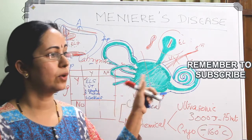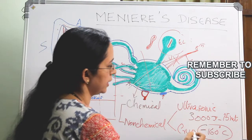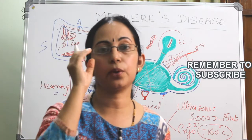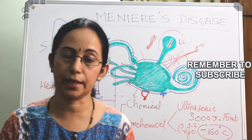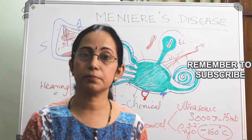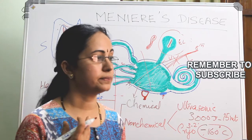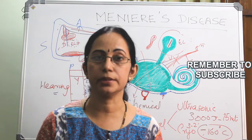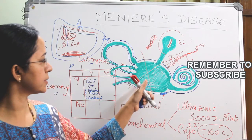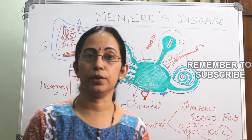Cryo is given as 3 cycles of 2 minutes each. The cryoprobe is kept into the ampullated end of the lateral semicircular canal through a transmastoid approach at minus 160 degrees Celsius, for 3 cycles of 2 minutes each. These are all the methods of non-chemical ablation of the vestibular end organ.